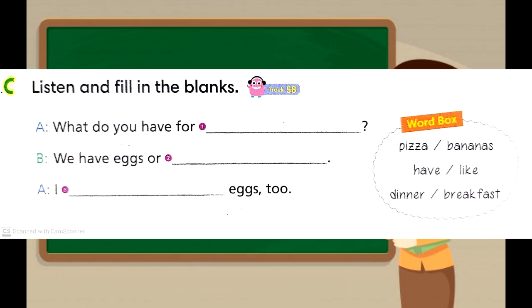Section C — listen and fill in the blanks. A: 'What do you have for breakfast?' B: 'We have eggs or bananas.' A: 'I have eggs too.'